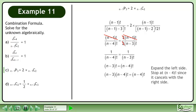Stop at n-4 factorial since it cancels with the right side. Cancel the n-4 factorials. The answer is n equals 4.